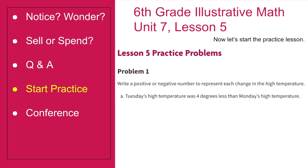Now let's start the practice lesson for Unit 7, Lesson 5. Write a positive or negative number to represent each change in the high temperature. We will do the first one together right now. A: Today's high temperature was 4 degrees less than Monday's high temperature. What would represent 4 degrees lower than — would it be positive 4 or negative 4?